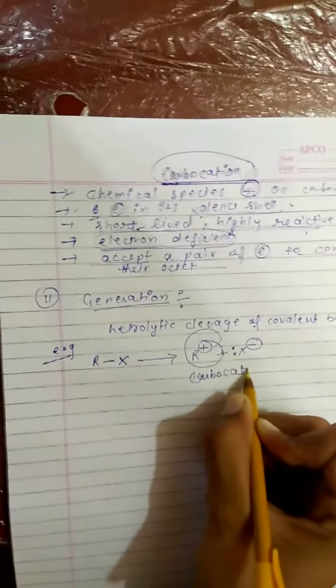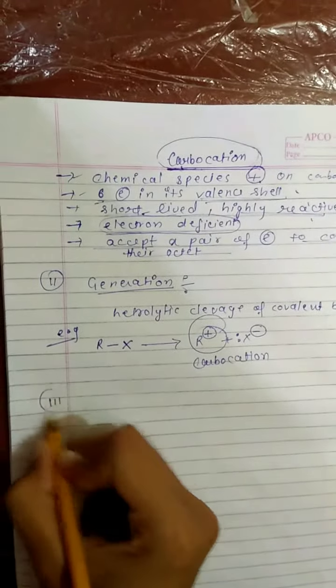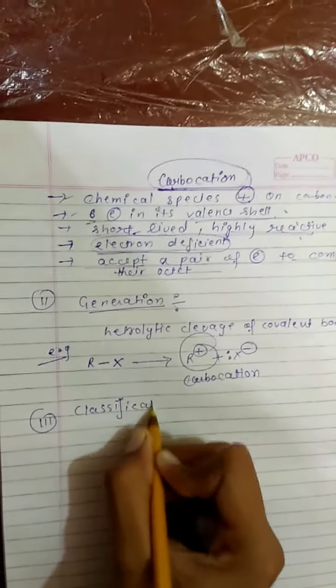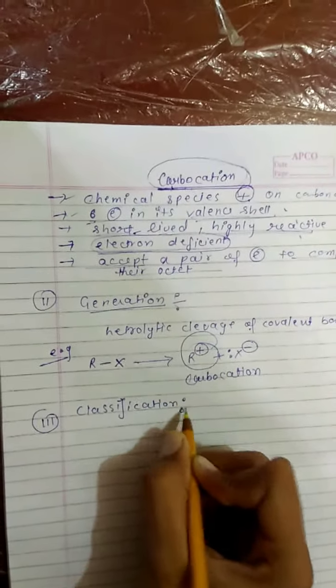This is a carbocation. Now the classification of carbocation. Carbocation is classified as primary, secondary, and tertiary.